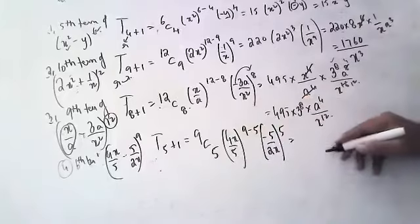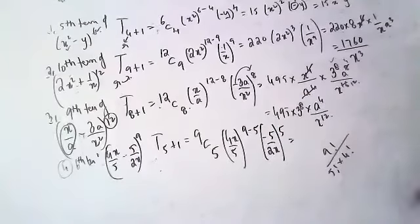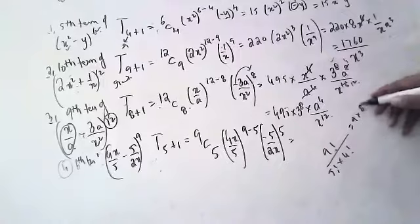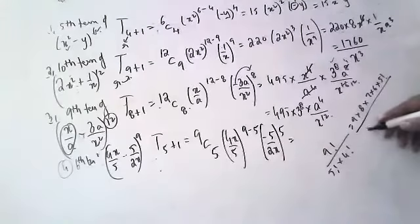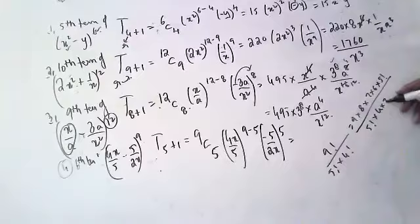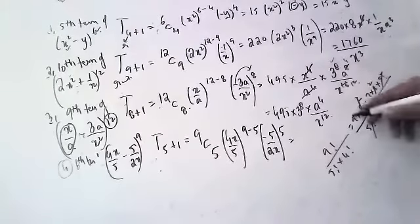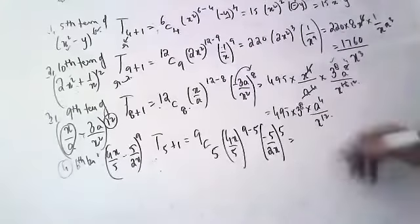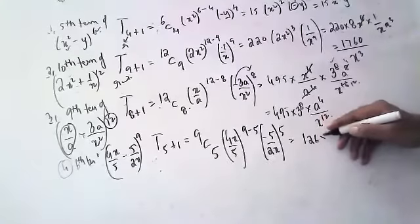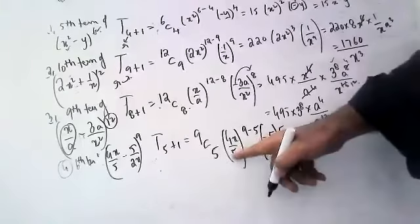9C5 = 9! / (5! · 4!) = (9 × 8 × 7 × 6 × 5!) / (5! × 4 × 3 × 2 × 1). Simplifying: 9 × 8 × 7 × 6 / 24 = 126. Total is 126.